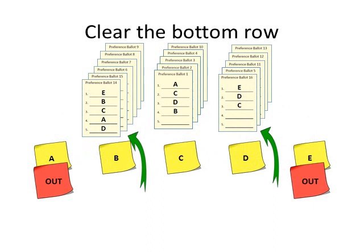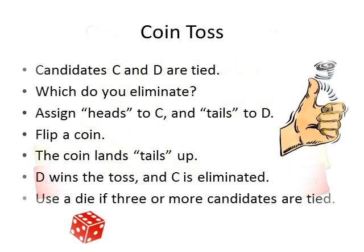Any ballots below the sticky notes should be placed on the appropriate stacks above the sticky notes. No candidate gets a majority in this second round, so the candidate with the fewest votes must be eliminated, but C and D are tied with the fewest votes. So we must toss a coin to determine which will remain in the race and which will be eliminated. The ballot counter assigns heads to C and tails to D, agrees that face up means the candidate will remain in the race, and then flips the coin. It lands tails up, so D stays in the race and C is eliminated.